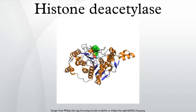Within the class I HDACs, HDAC1, 2, and 8 are found primarily in the nucleus, whereas HDAC3 is found in both the nucleus and the cytoplasm, and is also membrane-associated. Class II HDACs are able to shuttle in and out of the nucleus depending on different signals. HDAC6 is a cytoplasmic, microtubule-associated enzyme.